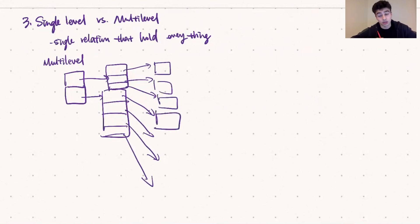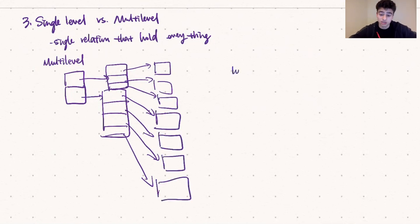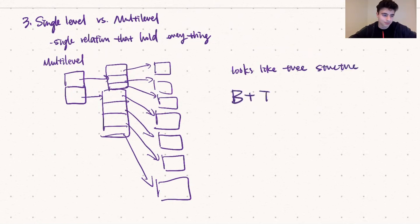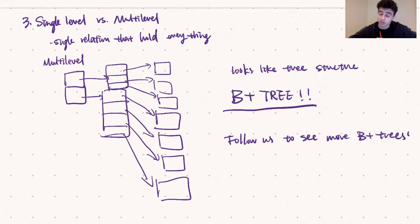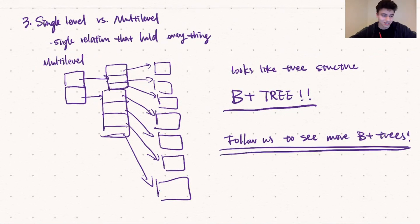Multi-level indexes are closely related to tree structures, and a common implementation uses a B-plus tree data structure. We're going to cover that soon, so stay tuned for that video. That's going to wrap up our discussion on indexes — if you enjoyed, don't forget to like, comment, and subscribe, and make sure to stay tuned for the B-plus tree video coming out soon.